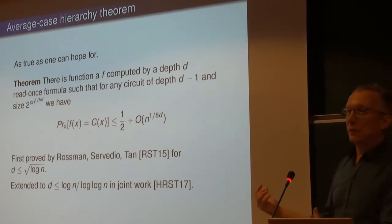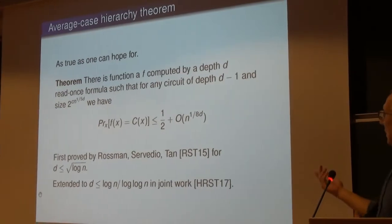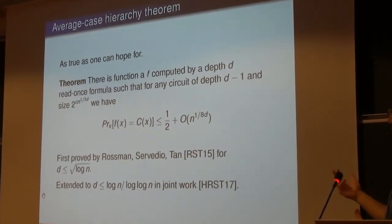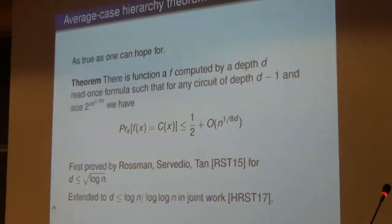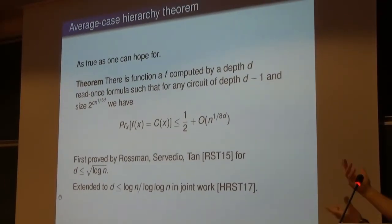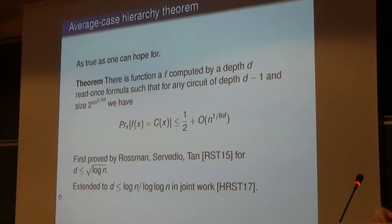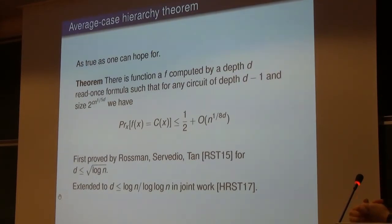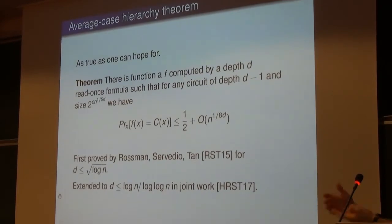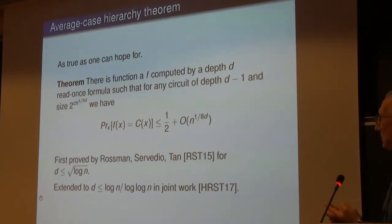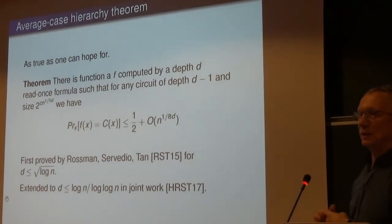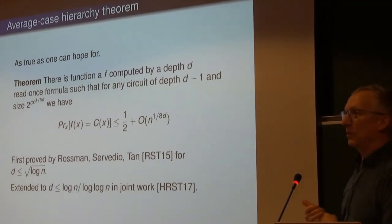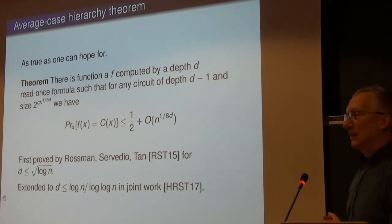A couple of years later, Rosman, Servedio and Tang also knocked off the average-case complexity for the hierarchy results, but only up to depth square root of log N. I got back into the game because I wanted to understand their result, which was also very difficult to read — proving new theorems is more fun than reading other people's proofs. I managed to push this up to the right depth, which is log N over log log N, where these methods stop.